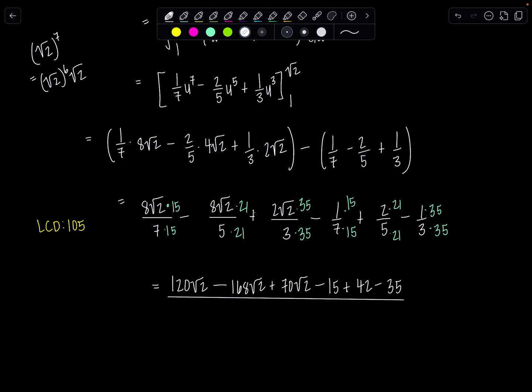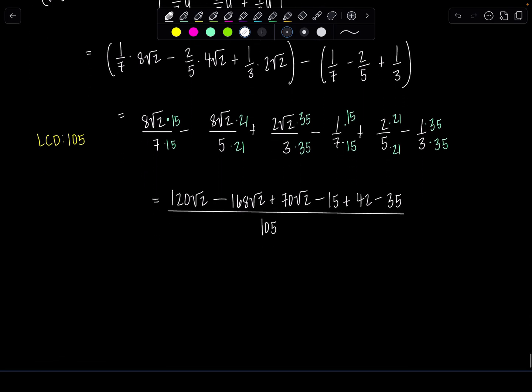We're almost there. Let's see: 120√2 plus 70√2 is 190√2 minus 168√2, that's 22√2. And then for the constants, -15 - 35 is -50, plus 42 is -8 over 105. There's our answer. Not the prettiest answer we've ever gotten, but you know what? It's correct, so we love it just as much as the rest.